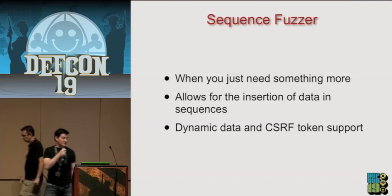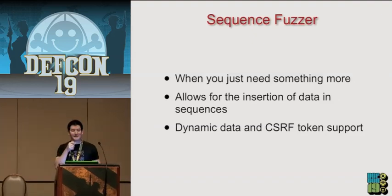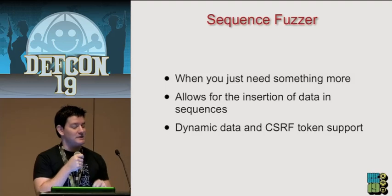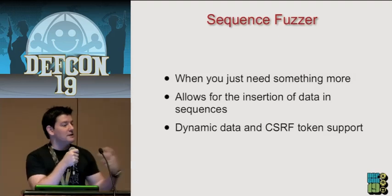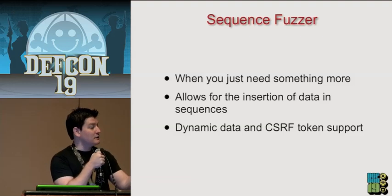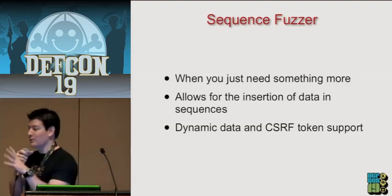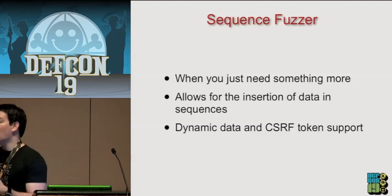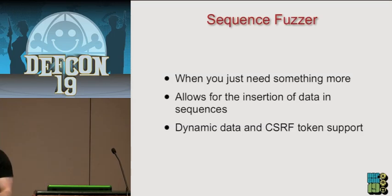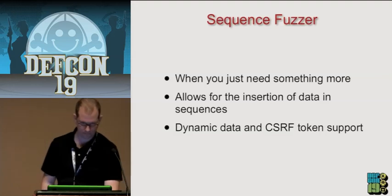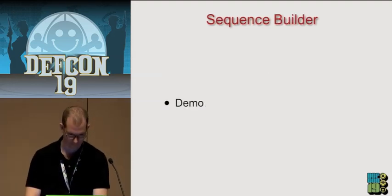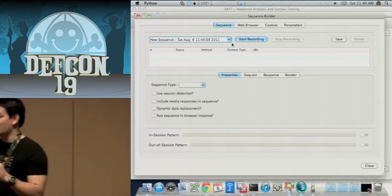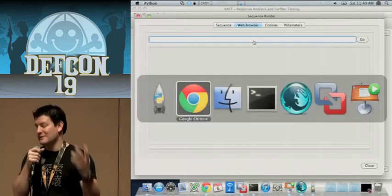We're going to have a sequence fuzzer with dynamic data replacement. You can import a sequence of events, tag that elusive CSRF token that's making all of your requests fail, and place it into your payload — so all those previous tests that were failing will now become successful. In the future, we'll have the ability to do any kind of dynamic data replacement on the DOM, so really difficult-to-test applications will no longer require manual work.